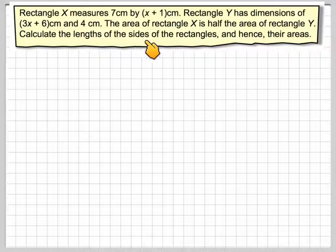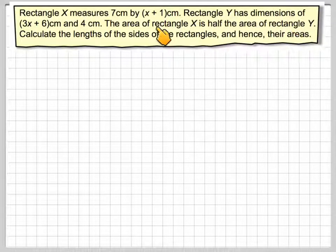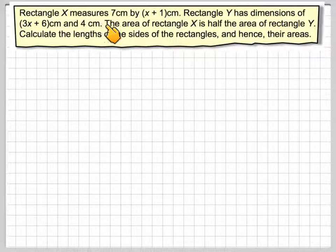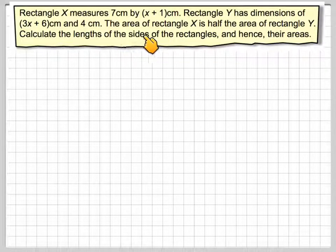Rectangle X measures 7cm by (x + 1)cm. Rectangle Y has dimensions of (3x + 6)cm and 4cm. The area of rectangle X is half the area of rectangle Y. Calculate the lengths of the sides of the rectangles and hence their areas.